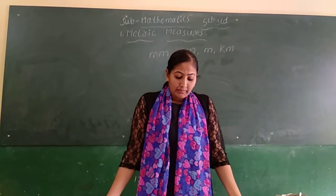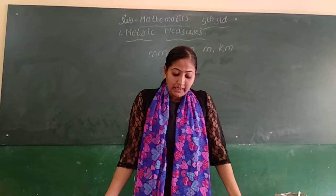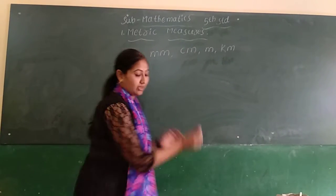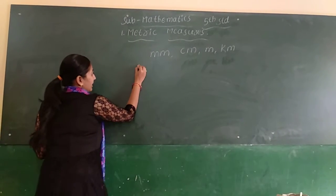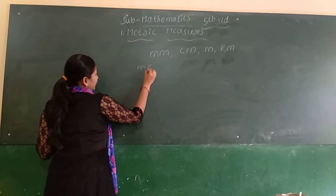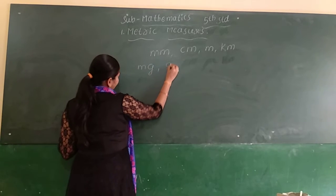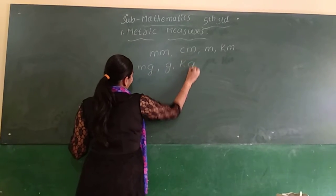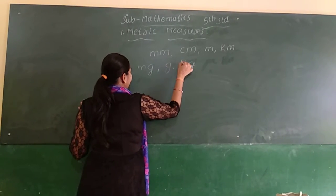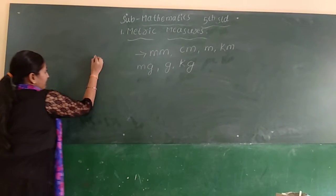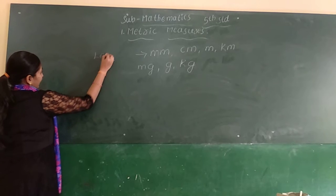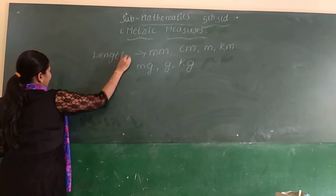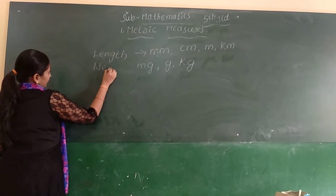Weights are measured in milligrams, grams, and kilograms, okay? Weight is measured in milligrams, grams, and kilograms. This one is for length and this one is for weight.